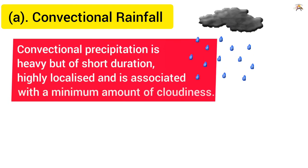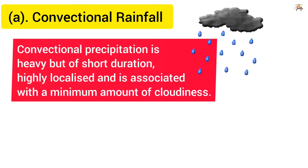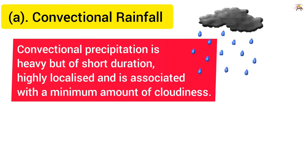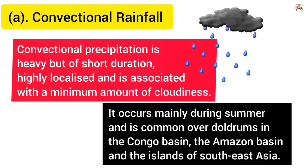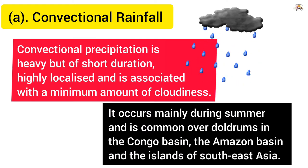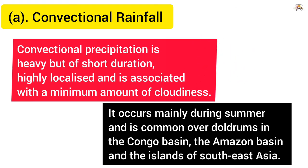Convectional precipitation is heavy but of short duration, highly localized, and is associated with a minimum amount of cloudiness. It occurs mainly during summer and is common over the doldrums, in the Congo Basin, the Amazon Basin, and the islands of Southeast Asia.